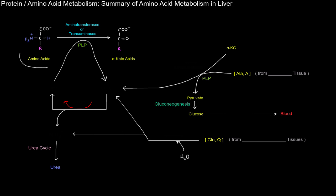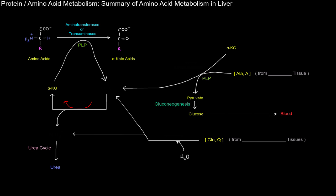Up to the top left here we've got amino acids that have come from the digestion of dietary proteins, and before we can actually oxidize them for energy we have to remove their amino groups and turn them into their alpha keto acid counterparts. That happens via transamination catalyzed by aminotransferases. That requires starting with alpha ketoglutarate and the amino group ends up being attached to alpha ketoglutarate, collecting on glutamate. Once we have these alpha keto acids we can oxidize them for energy.